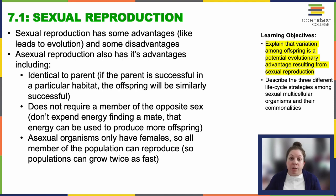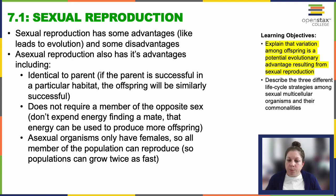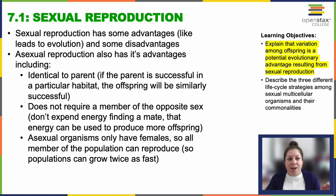Sexual reproduction emerged early in the evolution of eukaryotic cells and is widely prevalent among eukaryotes, demonstrating its evolutionary success. Many animals rely solely on sexual reproduction, like us. However, there are some recognized drawbacks to sexual reproduction. Specifically, genetically identical offspring can be advantageous if they're in a well-suited environment, so that's where asexual methods like budding and fragmentation offer a lot of benefits.